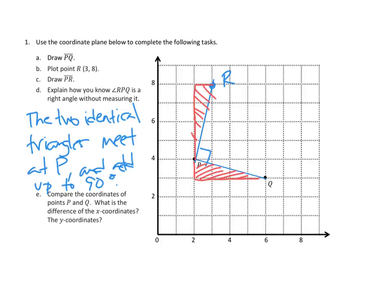And that's all I'm going to work on, except for number E. Compare the coordinates of points P and Q. What is the difference in the x-coordinates? The difference of the x-coordinates from P to Q goes over one, two, three, four. So I would say there's four units difference, four units of x. And how many different units of y? Well, just one. From P down to Q is just one unit of y.